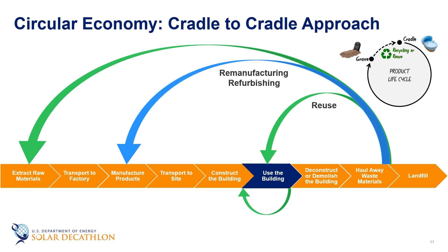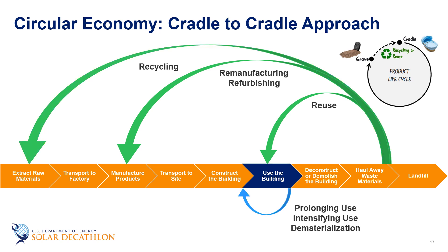Alternatively, we can take building components and refurbish or remanufacture them to make them useful in another building — for example, envelope systems like roofs or walls, which if certain construction practices are used, can be deconstructed and used in another building. In addition, some building products may be unusable as is, but the materials can be recycled and repurposed into completely different products. For example, metal products can be melted back to their original state and made into new products, and biodegradable products can be composted and used for another purpose. Circular economy is also about finding ways to extract greater value from existing resources before disposing of them. By prolonging the life of a product or intensifying its use in more than one application, we can reduce the amount of waste produced.